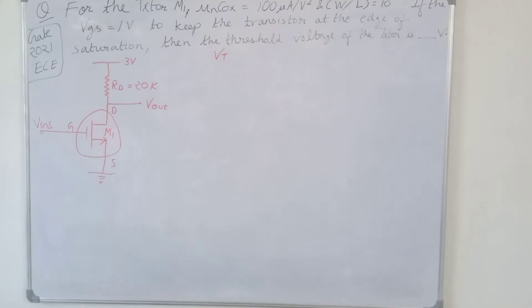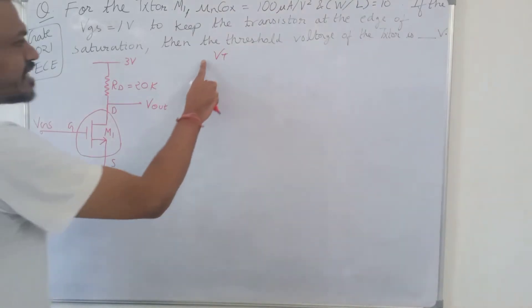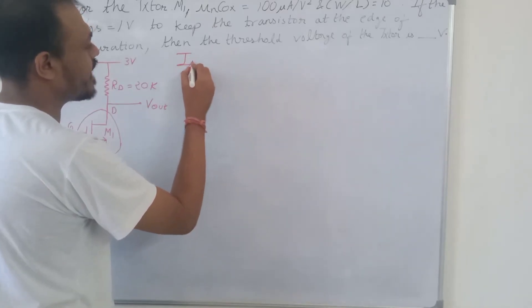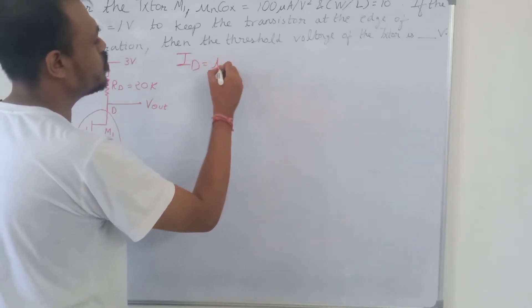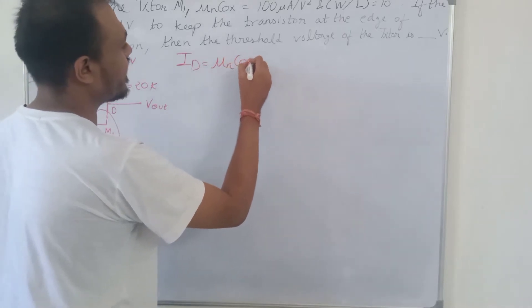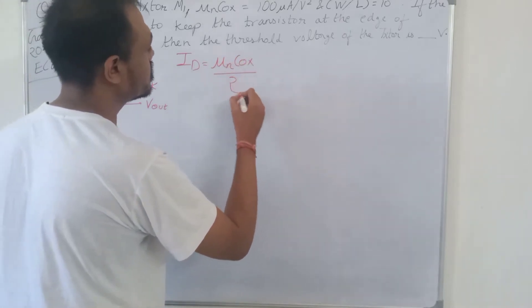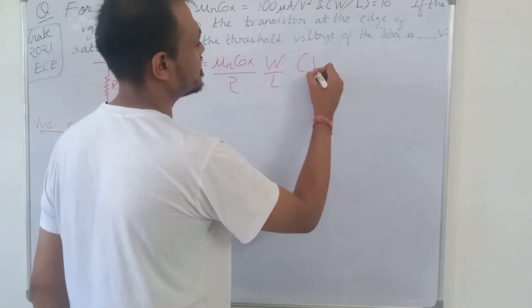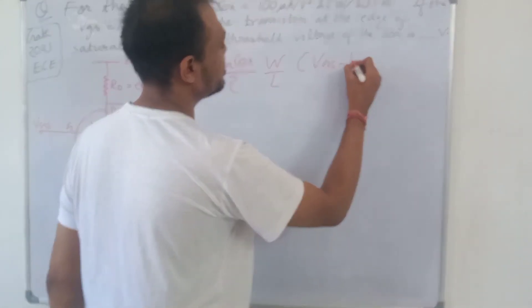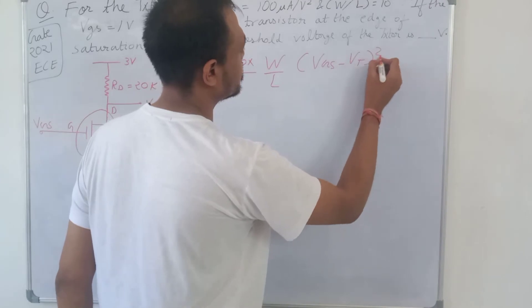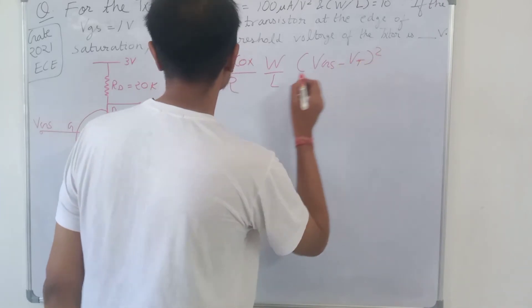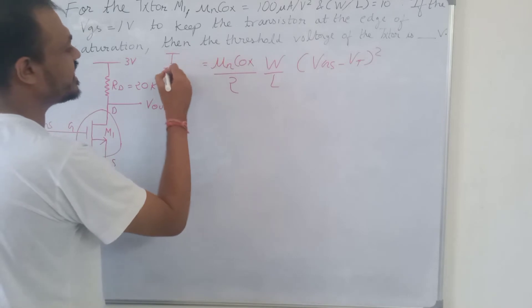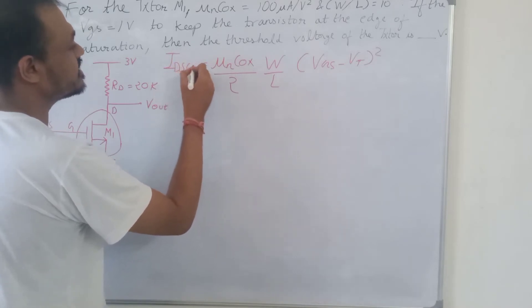For the transistor in saturation, the equation for drain current IDS is: (μn·COX / 2) · (W/L) · (VGS − VT)². This is the equation for saturation drain current IDS.